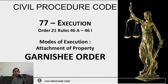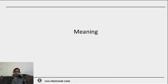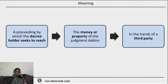The Civil Procedure Code under Order 21, Rules 46A to 46I speaks about one special order of the court — the Garnishee Order. The meaning of the Garnishee Order is a proceeding by which the decree holder seeks to reach the money or the property of the judgment debtor in the hands of a third party.